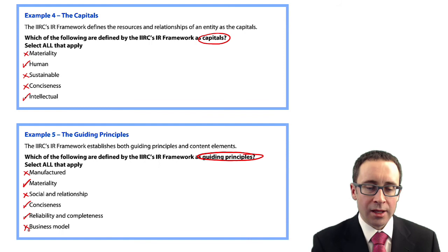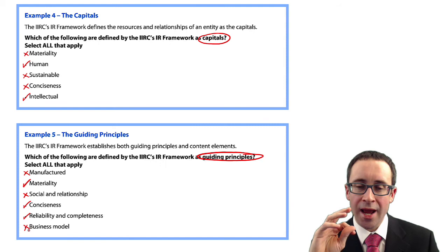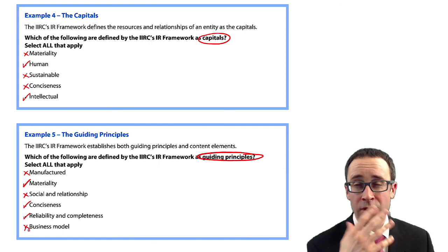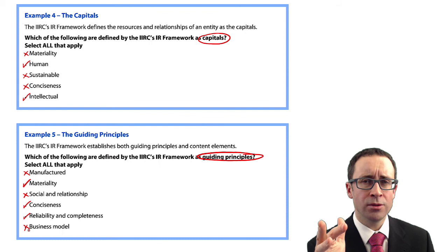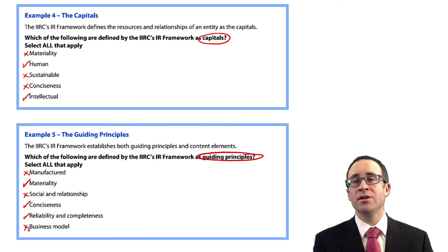It's going to be quite a challenge. I think the best thing to do is learn the capitals first — that's the easiest bit — and then learn the guiding principles. If a question asks which of the following are content elements, you can use those capitals and guiding principles as a process of elimination to work out what the content elements are. Or alternatively, you could learn all three. It's entirely up to you, but you do need to know them all.